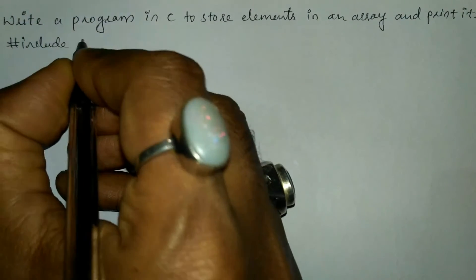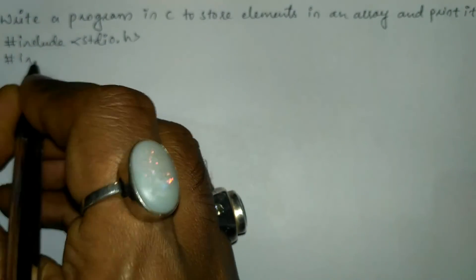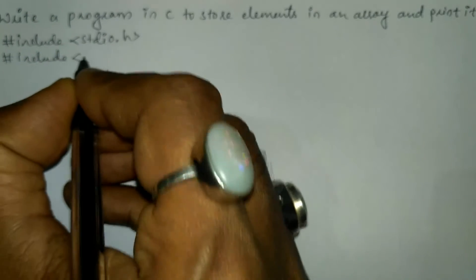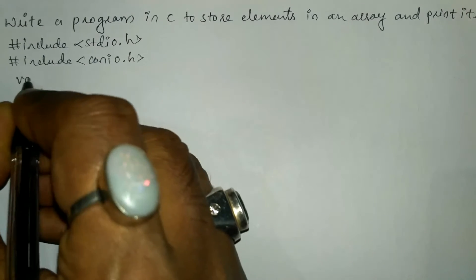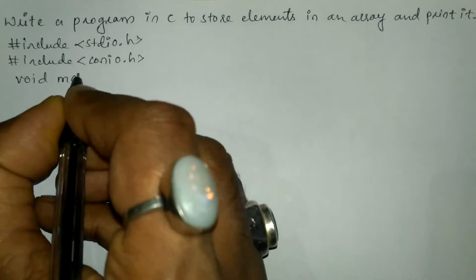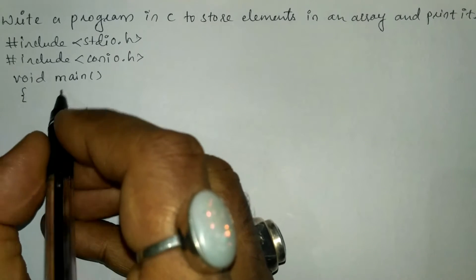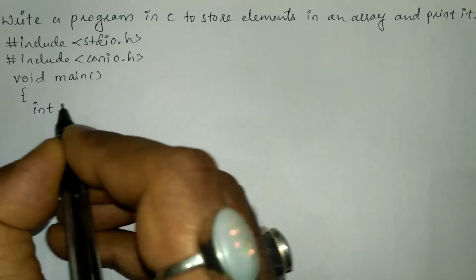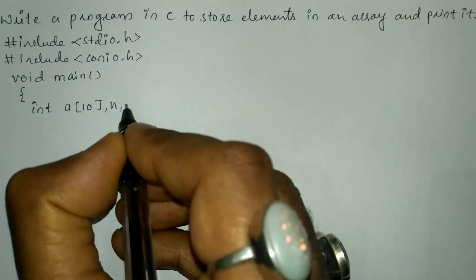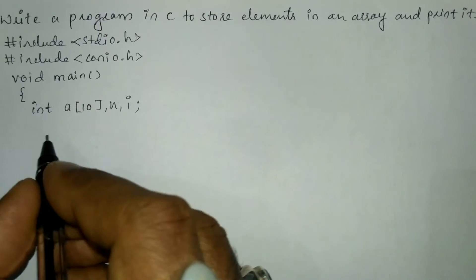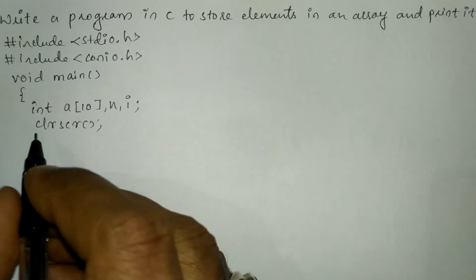Let us write the pre-processor directives: hash include in angle braces, standard input output dot h header file. The next pre-processor directive is hash include in angle braces, console input output dot h. We will write the main function with an opening curly brace, and declare the variables of type integer: 'a' is an array of size 10, 'n' is the number of elements, and 'i' is the subscript. Now we'll write the clrscr function, which is used to clear the screen.